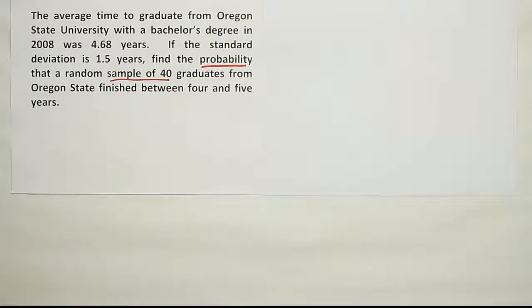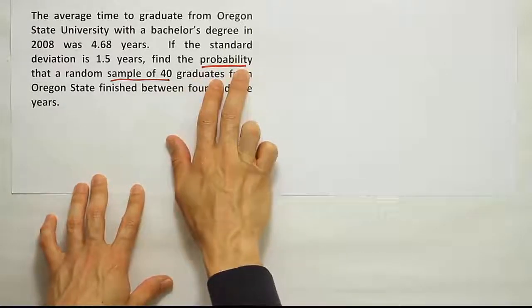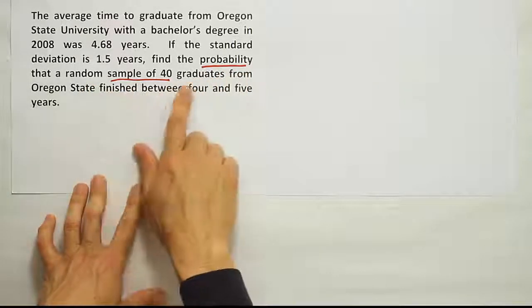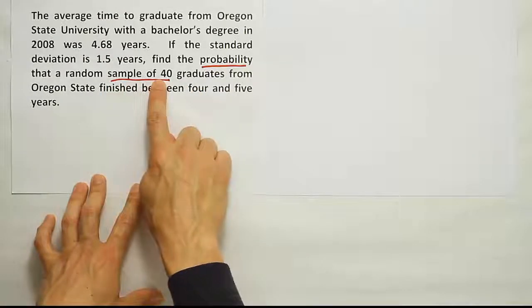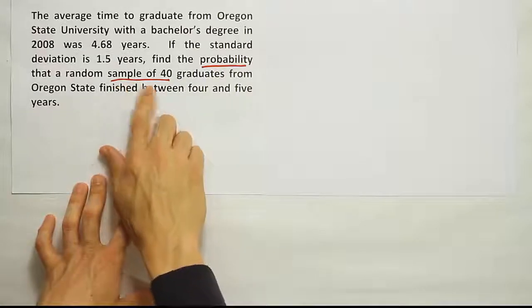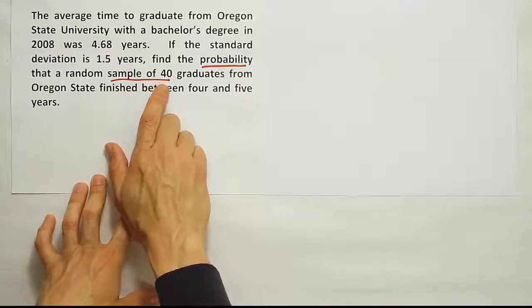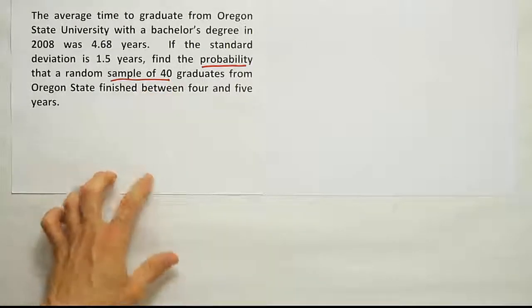I've identified some key phrases here. The first thing is that we're looking for a probability. The second thing is that it's not the probability for an individual student to graduate between 4 and 5 years, but rather for the average of a sample of 40 graduates to finish between 4 and 5 years. The fact that we have a sample of 40 which is greater than 30 means we can apply the central limit theorem and assume that this average will have a normal distribution.